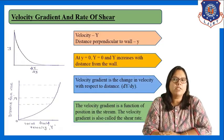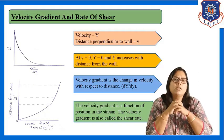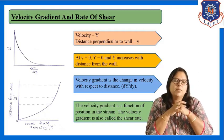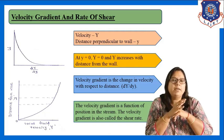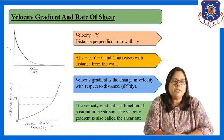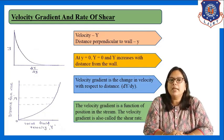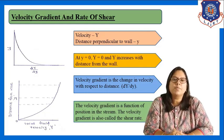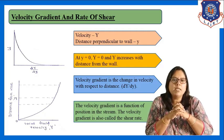Now let us move to velocity gradient and rate of shear. When we say 'rate,' that means change in a factor with respect to time. When we say 'gradient,' that means change in a factor with respect to distance. So 'velocity gradient' means change in velocity with respect to distance.